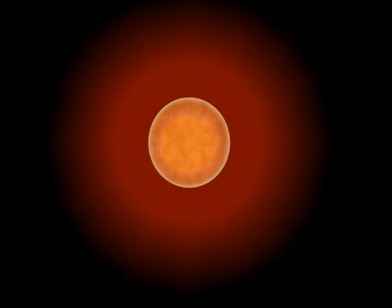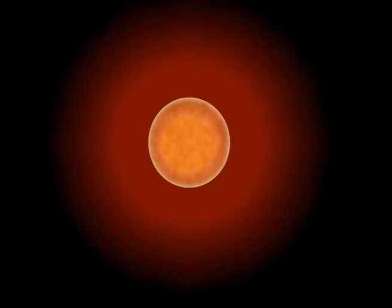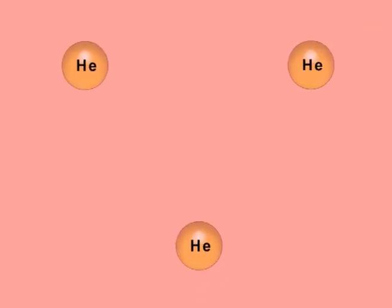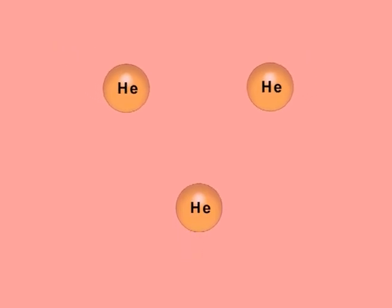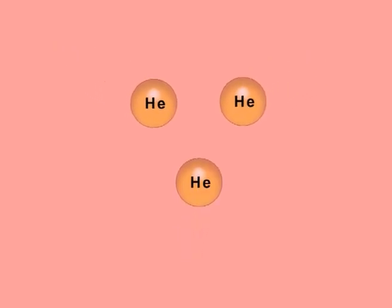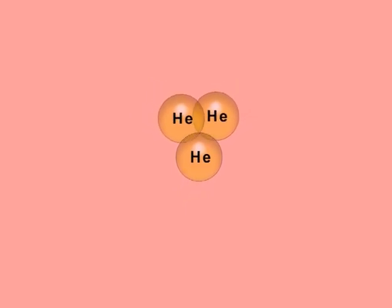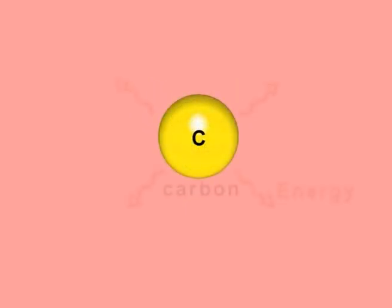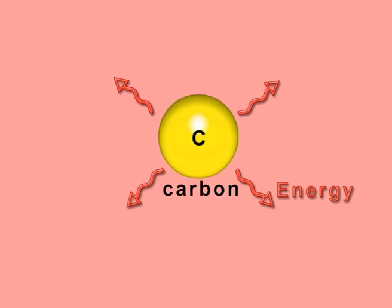In billions of years, when the hydrogen fuel is used up, it will expand to become a red giant. It will continue to generate energy, as the helium produced by the initial nuclear fusion is recycled, fusing together to produce heavier chemical elements.